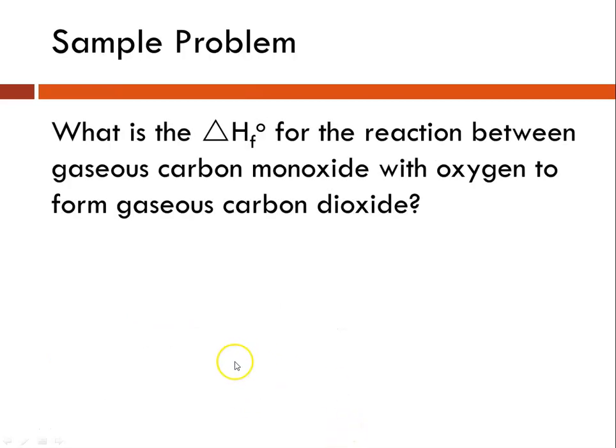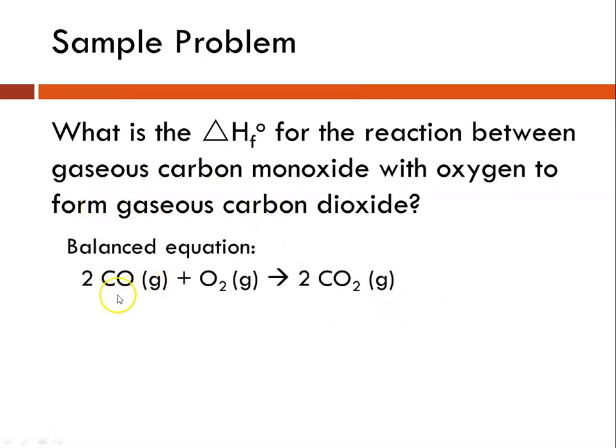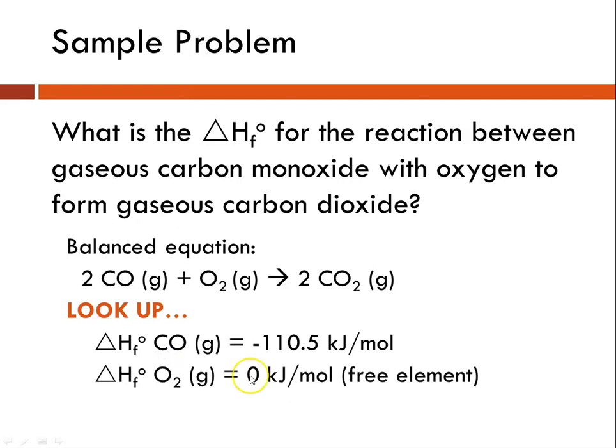Here's a sample problem. What is the delta H of formation for the reaction between gaseous carbon monoxide with oxygen to form gaseous carbon dioxide? So the equation looks like this: 2 CO (g) + O2 (g) → 2 CO2 (g). We would look up our delta H's. Here is my carbon monoxide, here is my oxygen—remember, it's in its elemental state, so it is zero—and then here is my carbon dioxide.